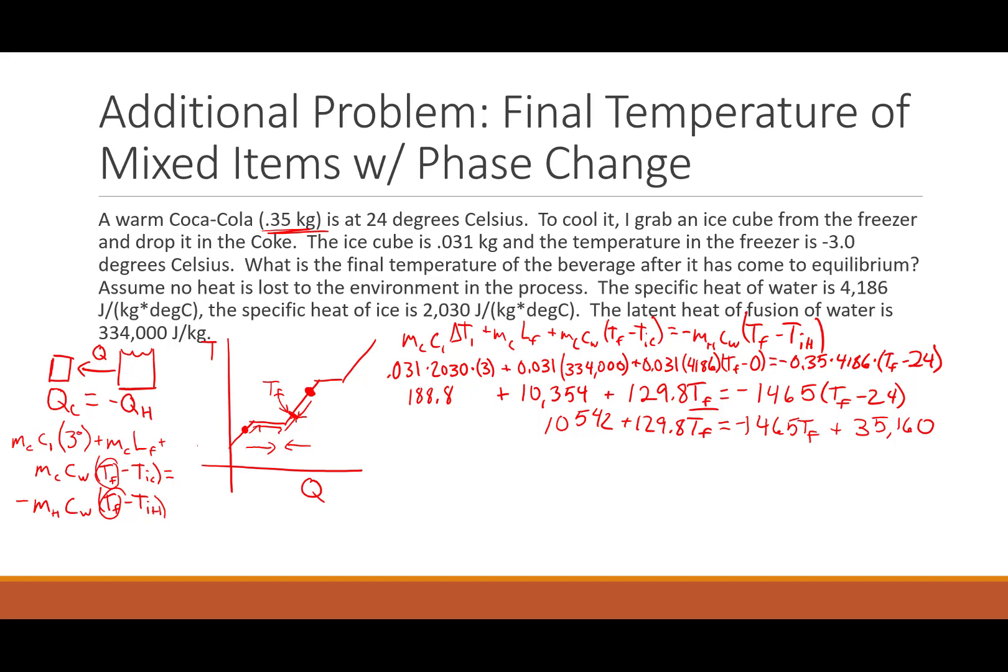We just need to group our T finals together and our constant terms together. So I'm going to add this from both sides. Add 1465 T final to both sides and subtract 10,542 from both sides. So plus 1465 T final plus 1465 T final, that cancels. And then minus 10,542 minus 10,542. We end up with, on our left side we have 129.8 plus 1465 equals 1594.8 T final equals, let's do the right side, 35,160 minus 10,542 equals 24,618.